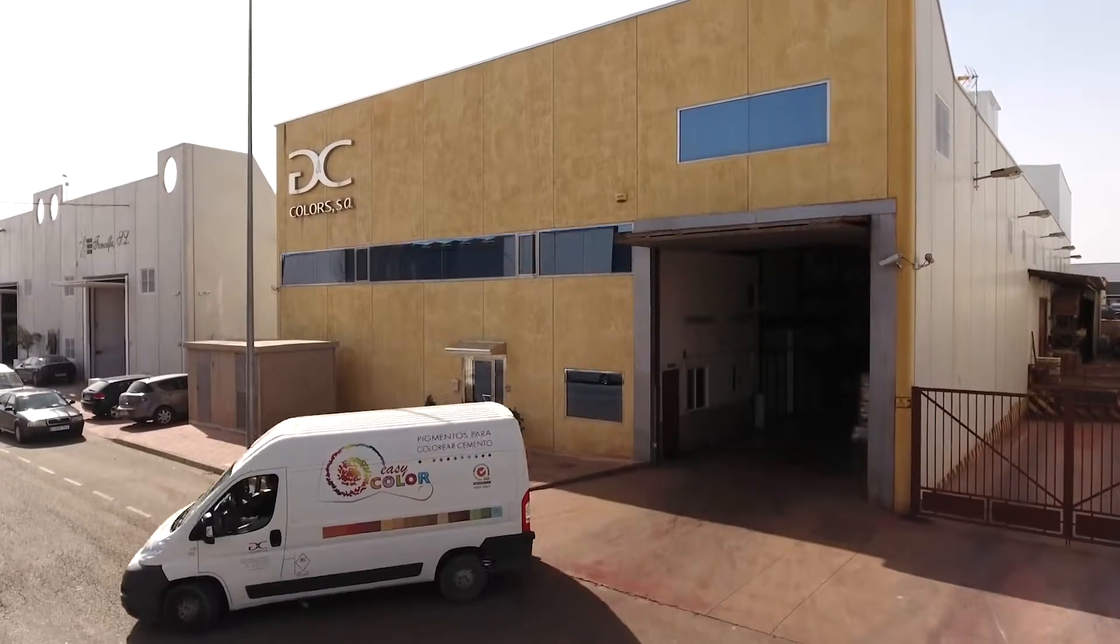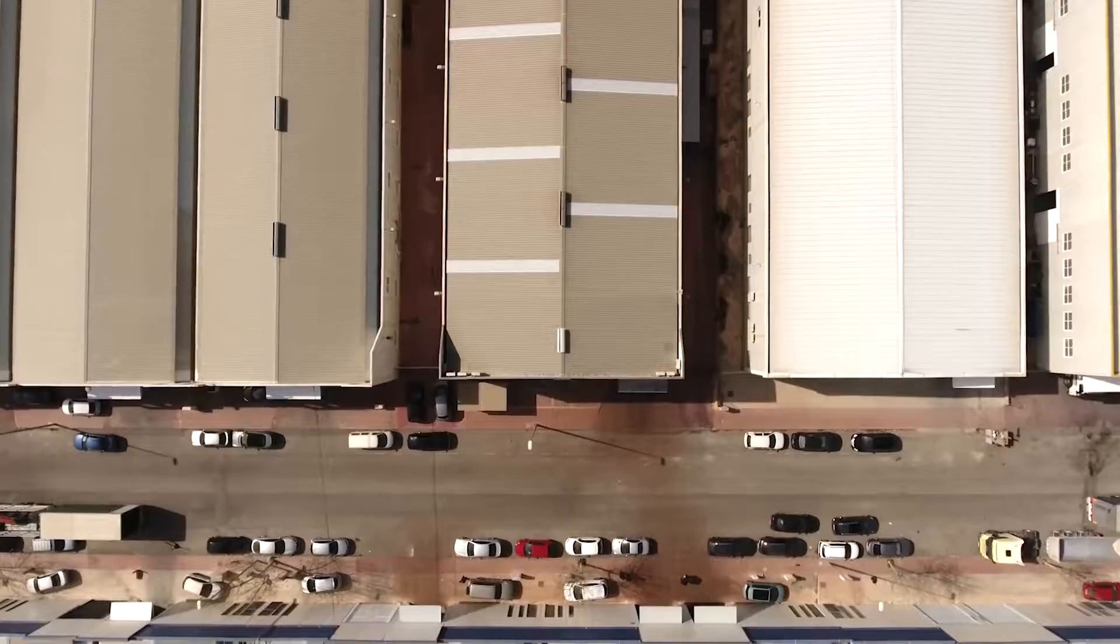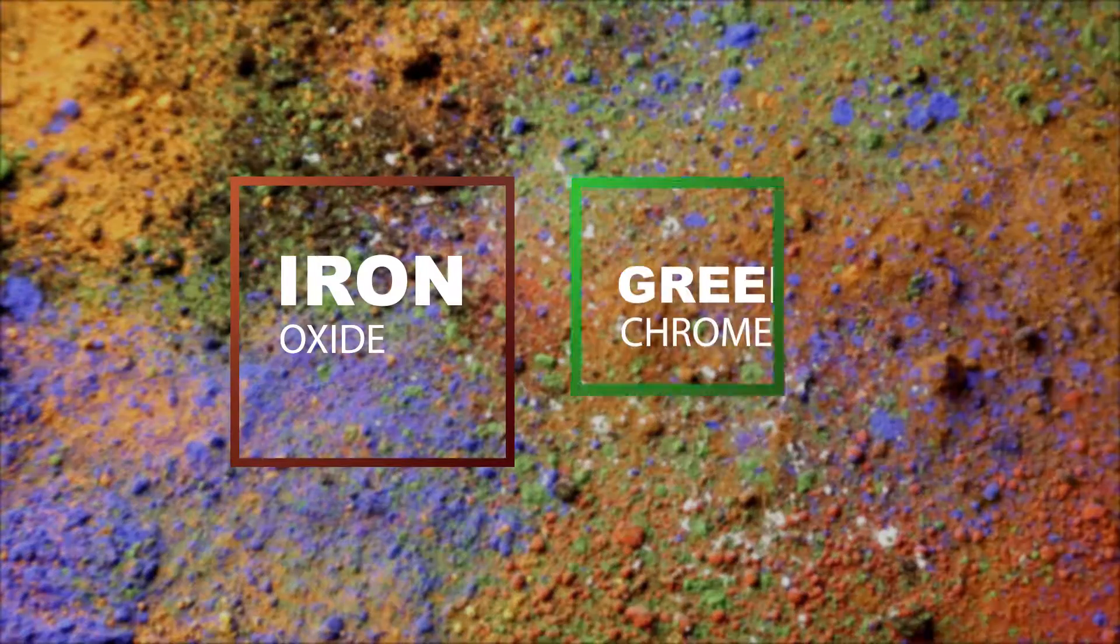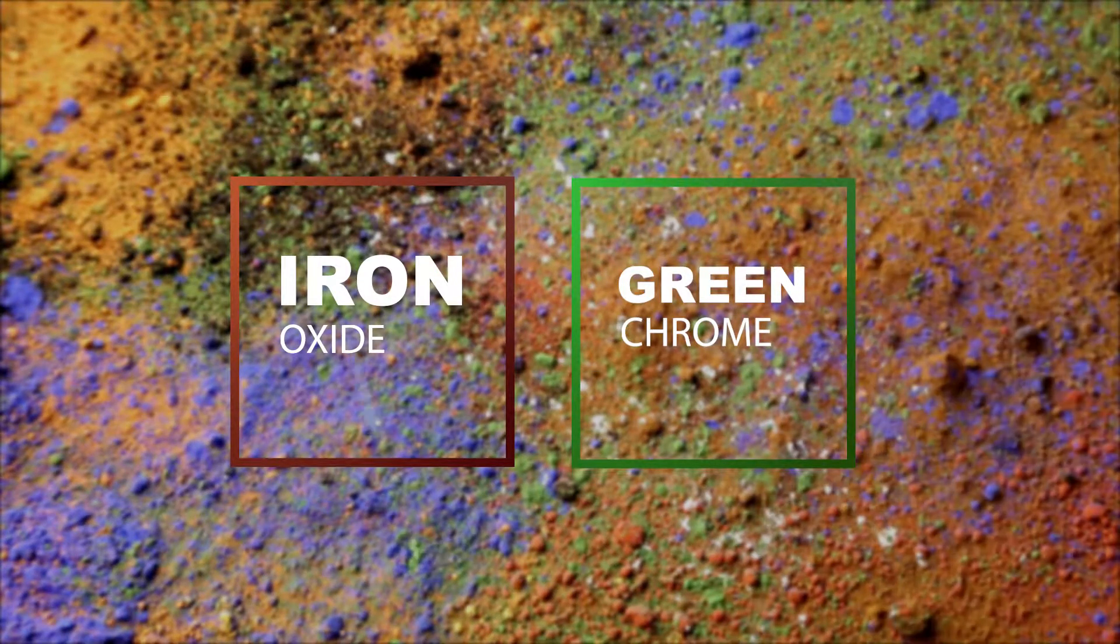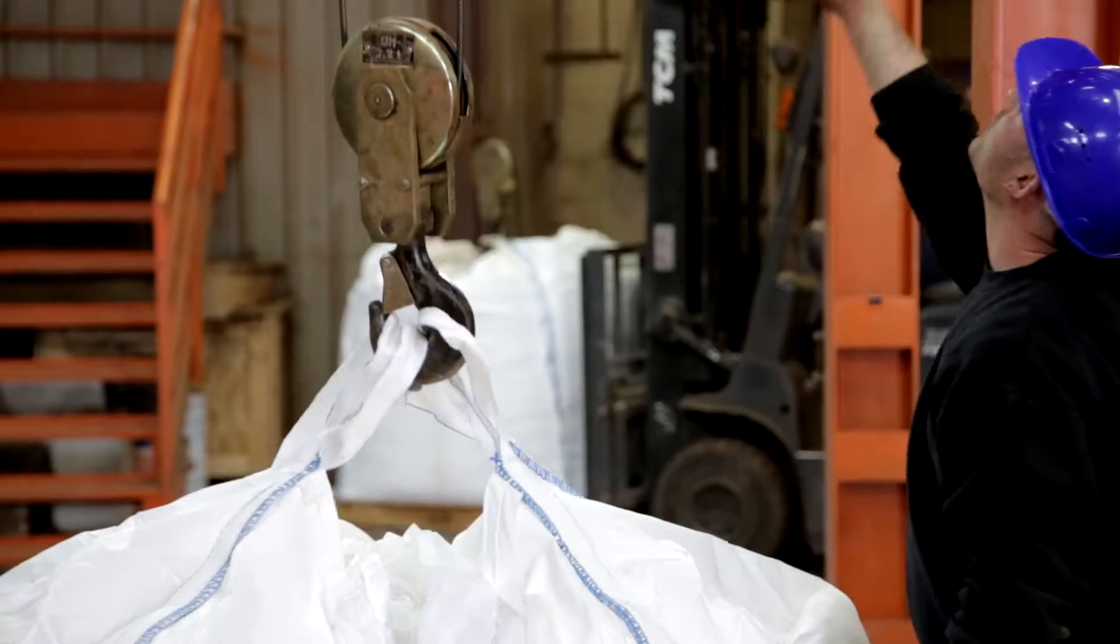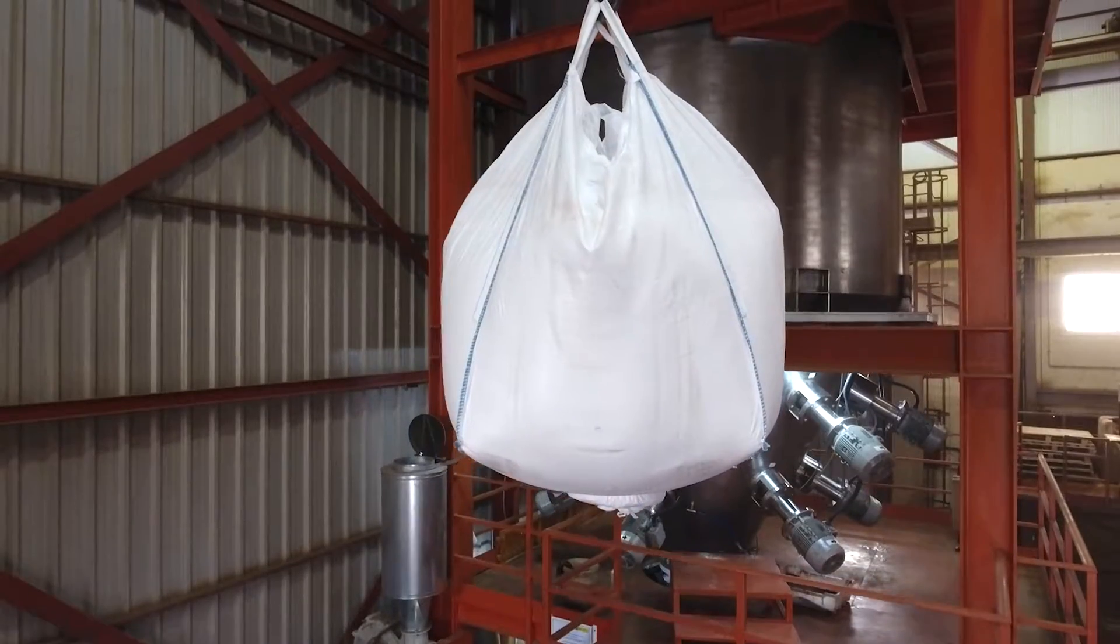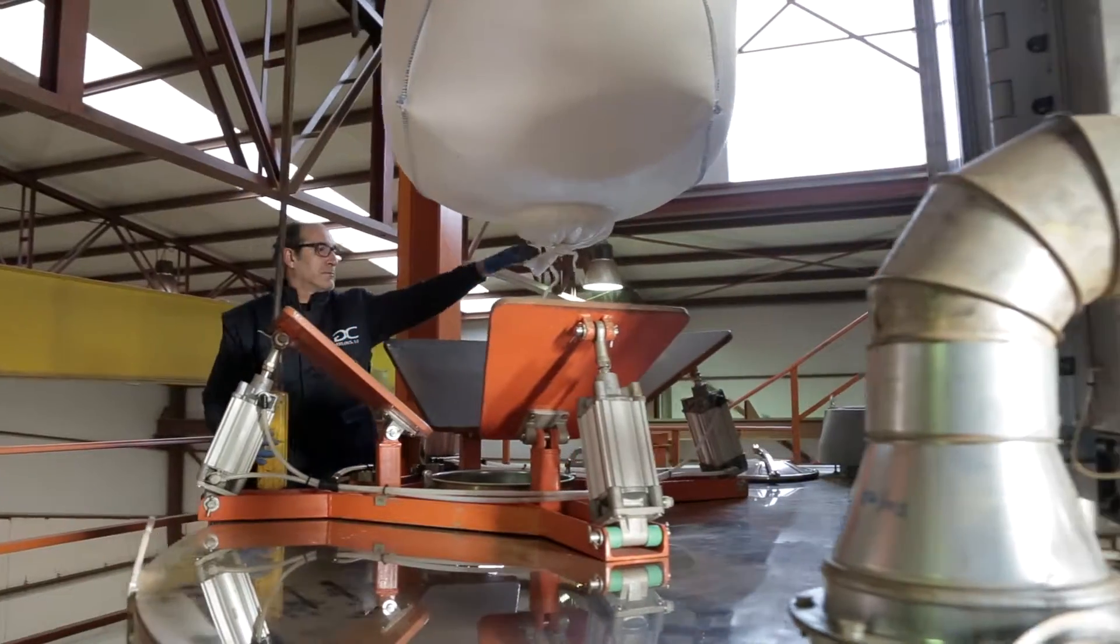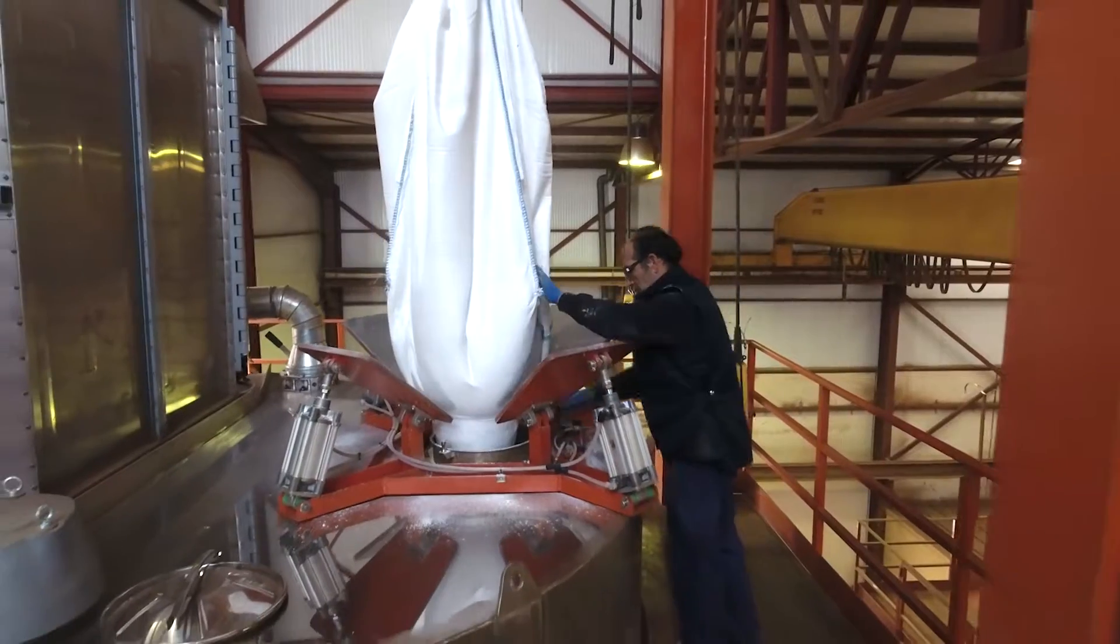G&C Colors specializes in the production of various inorganic pigments, among which synthetic iron oxides and chrome oxides, both under the brand Chromafair, are two of its major products. We develop customized pigments in compliance with the very highest quality standards, adapting to the most diverse and demanding conditions in a variety of fields of application.